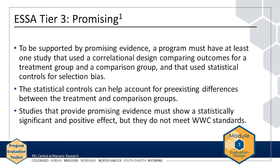To be supported by promising evidence, a program must have at least one study that used a correlational design comparing outcomes for a treatment group and a comparison group, and that used statistical controls for selection bias. The statistical controls can help account for pre-existing differences between the treatment and comparison groups. Studies that provide promising evidence must show a statistically significant and positive effect; however, these studies do not meet WWC standards.